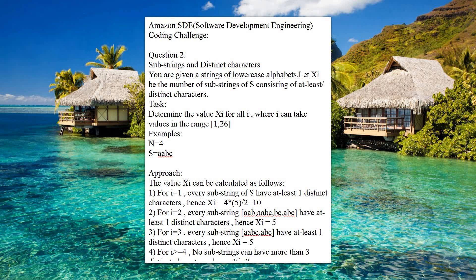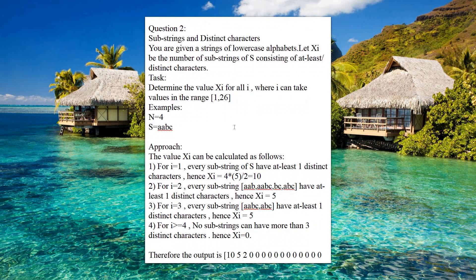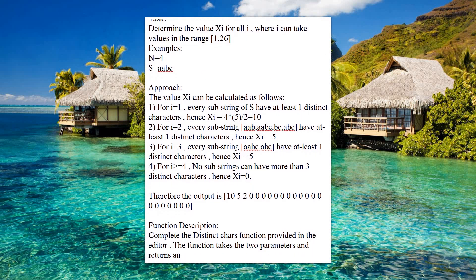Programming question 2 is based on strings — substrings and distinct characters. We are given a string of lowercase alphabets, and xi is the number of substrings formed from string s which contain at least one or more distinct characters. Our task is to determine the value xi for all i, where i can take values in the range 1 to 26.